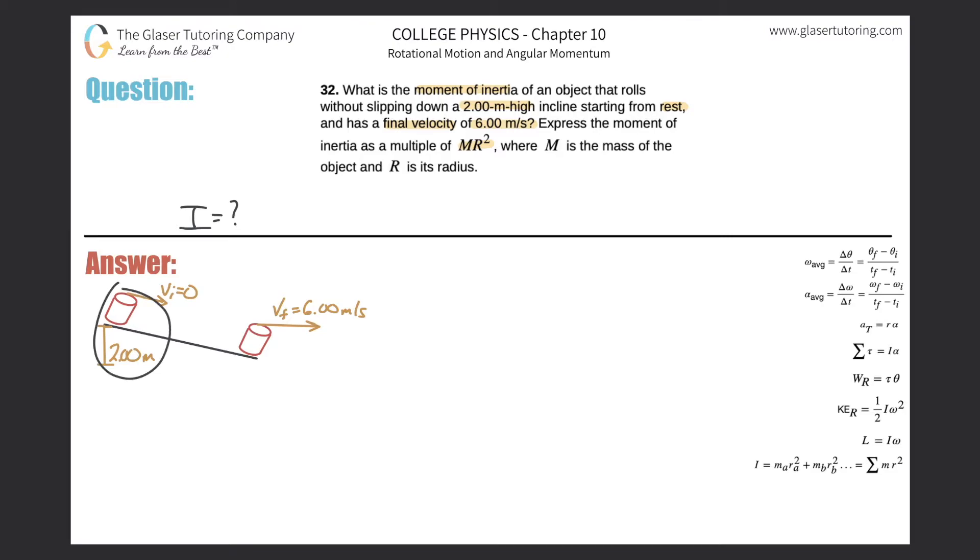I'll call the initial condition point one and the end point two. The energy at the beginning will equal the energy at the end. At the beginning it's not moving, so no rotational energy, no translational kinetic energy, but it does have potential energy due to gravity. After the object rolls down the hill with no height left, there's no potential energy but there will be